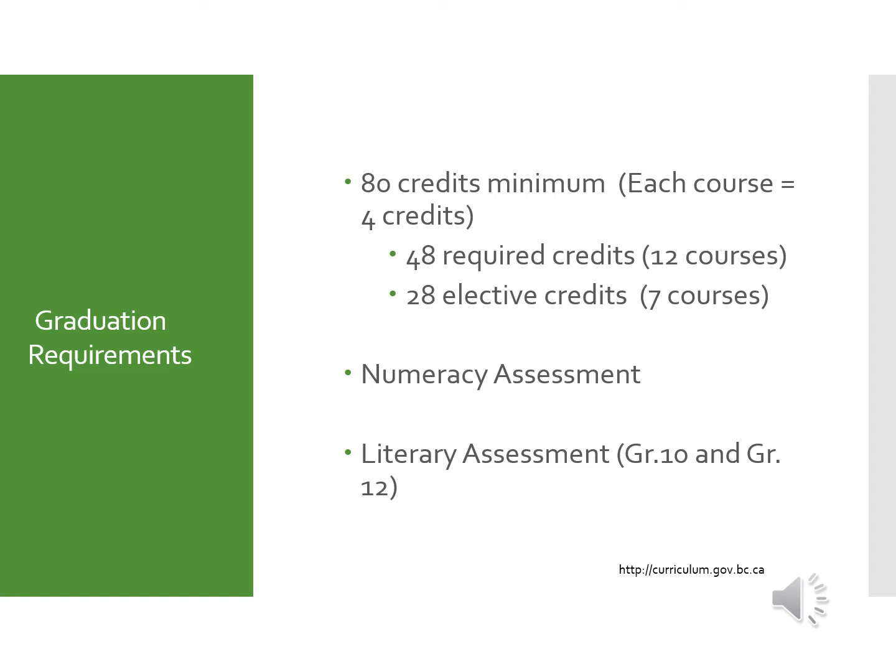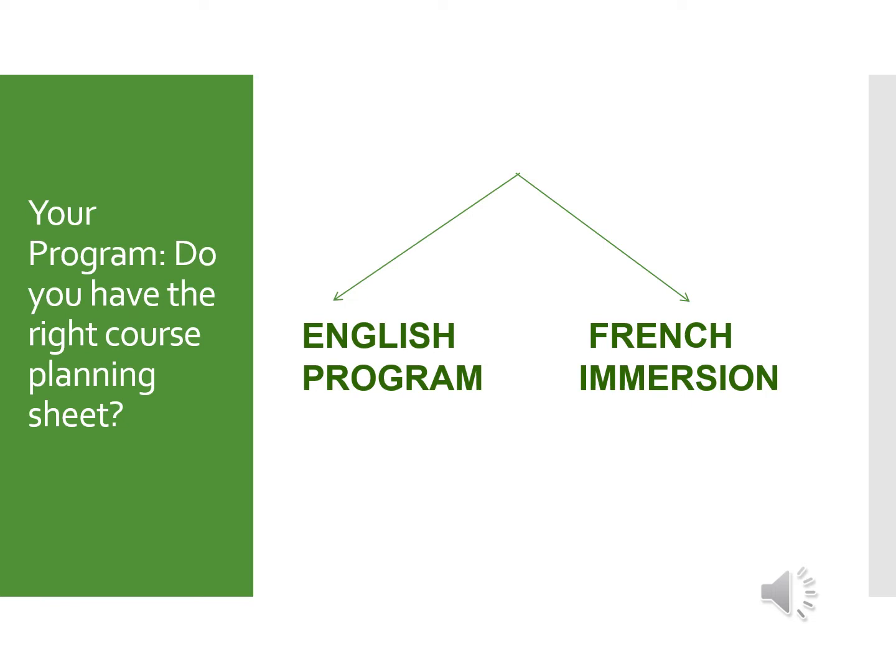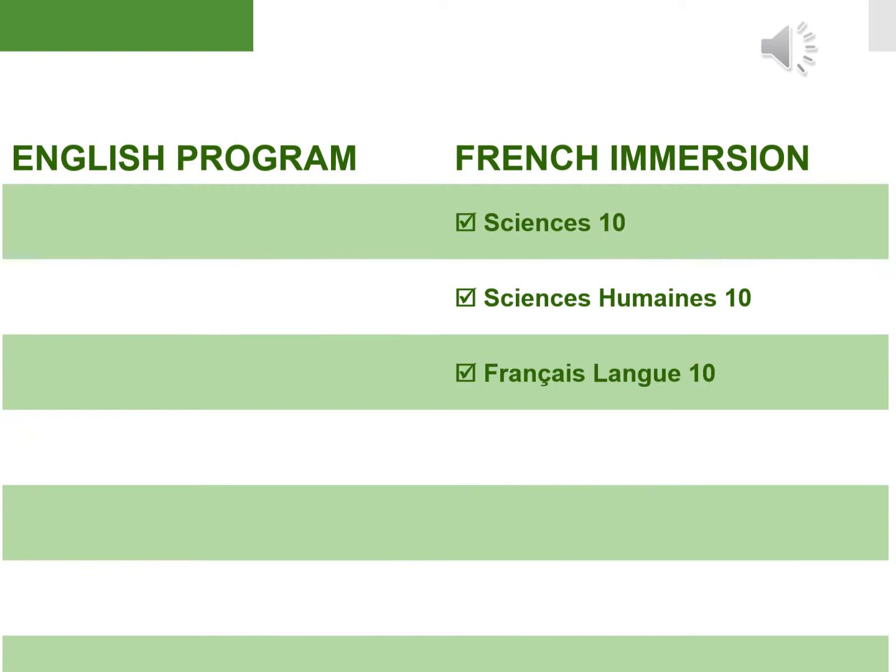You need 80 credits minimum to graduate, and each course is four credits. There are 12 required courses and a minimum of seven elective courses required to graduate. You'll also be required to complete a numeracy assessment — generally done in grade 11 but must be completed before graduation — and a literacy assessment in grade 10 and in grade 12. When you get your course planning package, first check that you have the right course planning sheet: English program or French program.